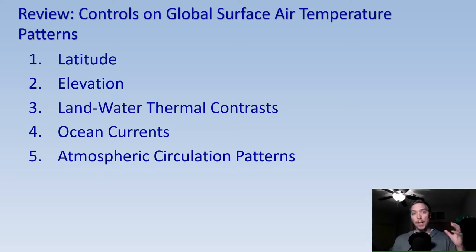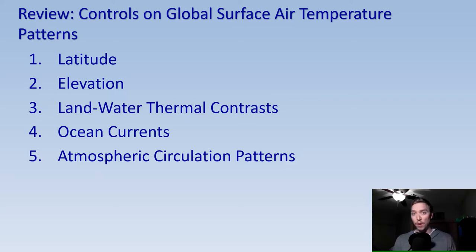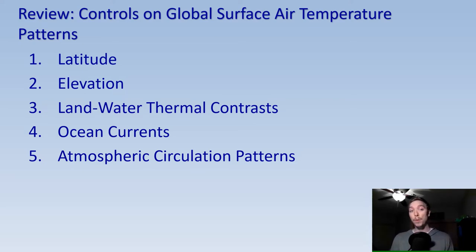These variations really start to drive thermal differences across our planet. They're also augmented by things like elevation — if we think of the Tibetan Plateau, Mount Everest, the Rockies, Mount Kilimanjaro, Mount Fuji — we see these temperature differences, which is why mountains are often snow-capped. There are also land and water thermal contrasts. Water takes longer to heat up, but it also takes longer to release that heat, so water plays a moderating role on global surface air temperatures. Ocean currents do as well, and we'll cover those in our next set of lectures.